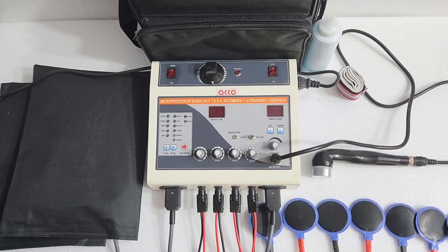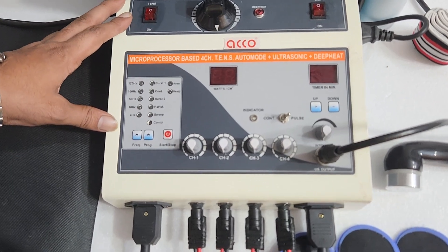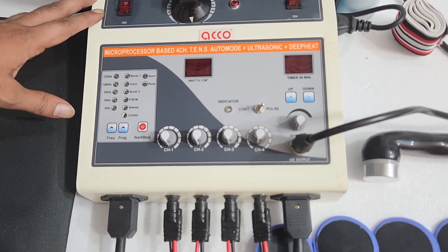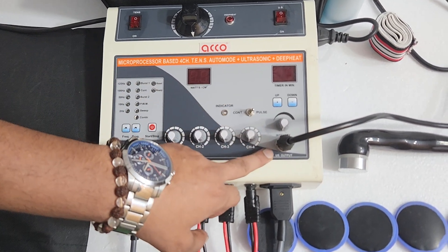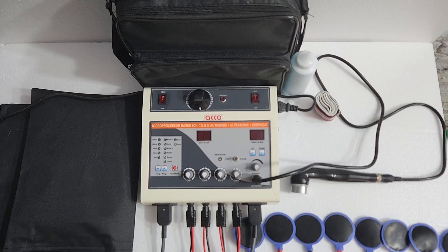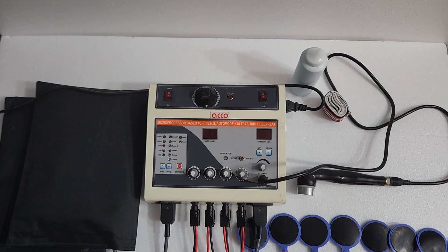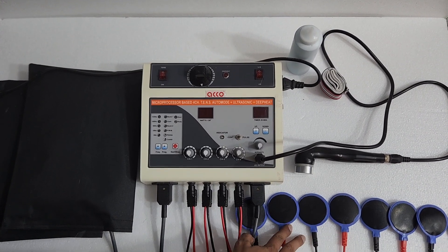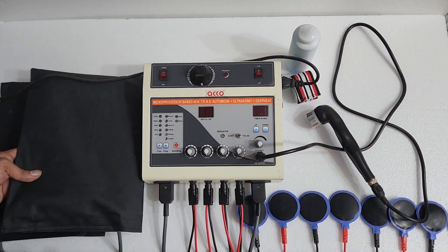Hello friends, welcome to our channel Medical Bazaar. Today we will show you the demo of ELCO combination therapy machine. It has a combo of 4-channel TENS, 1 megahertz ultrasound, and deep heat. This machine comes with a carry bag, TENS wire and pads, ultrasound handle (1 megahertz), two pads of deep heat with gel bottle, and a set of straps.